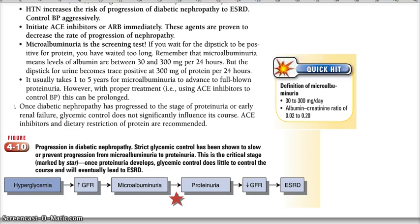Proteinuria will decrease GFR, and that will cause end-stage renal failure or disease.